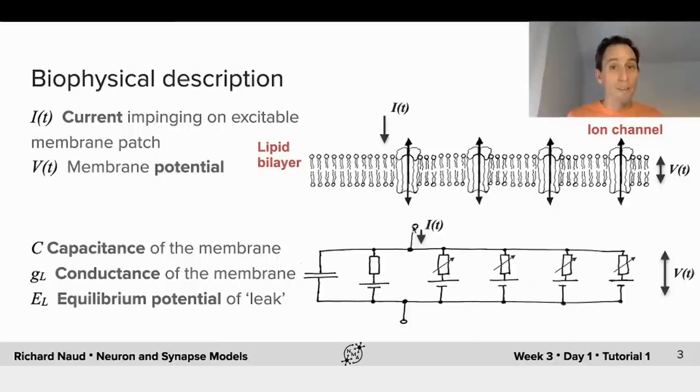Ion channels are these proteins sitting on the lipid bilayer that can allow ions to flow through. But this allowing ions to flow through is regulated by the shape of the protein, such that we conceive those ion channels as conductance that are variable and that are coupled also to a battery. And the conductance actually depends on the membrane potential itself.